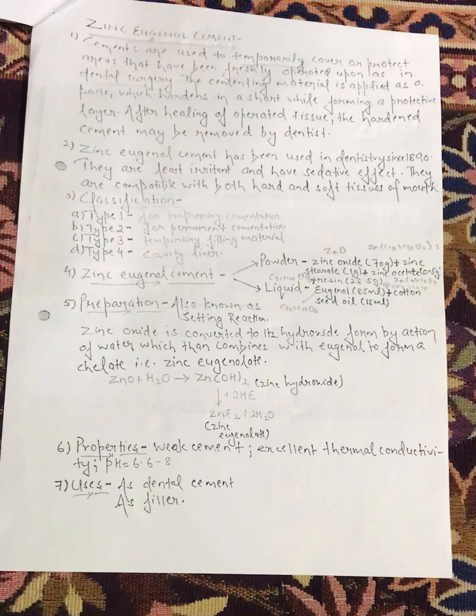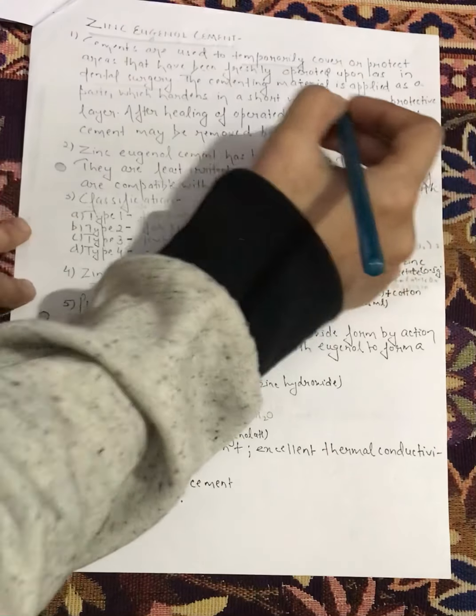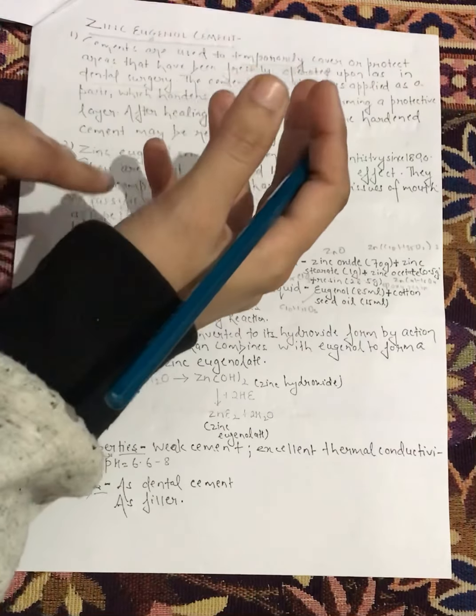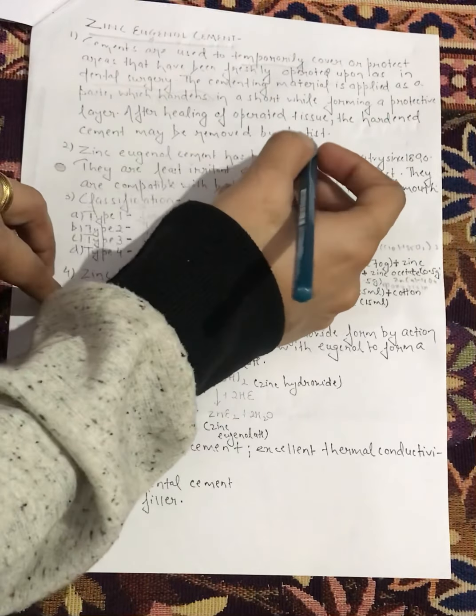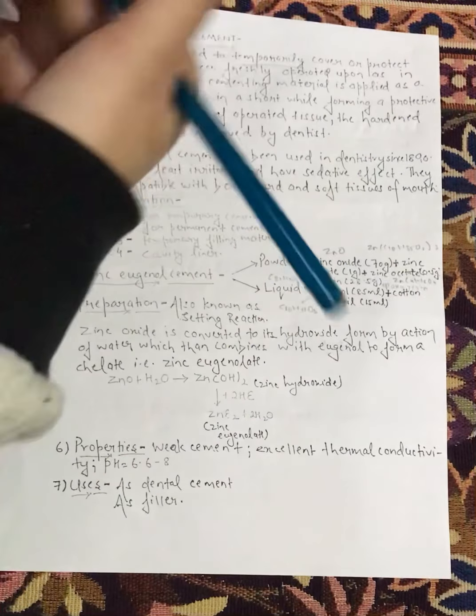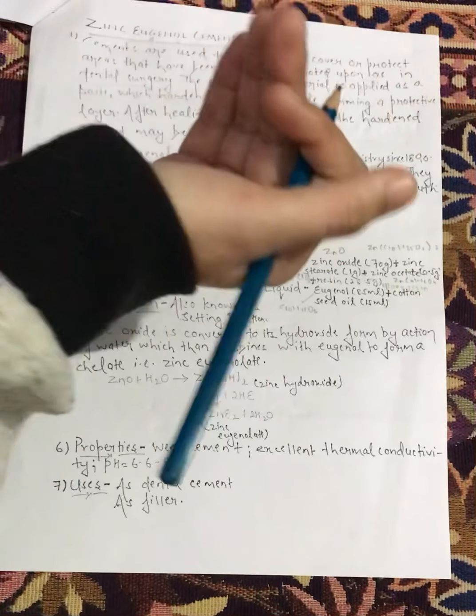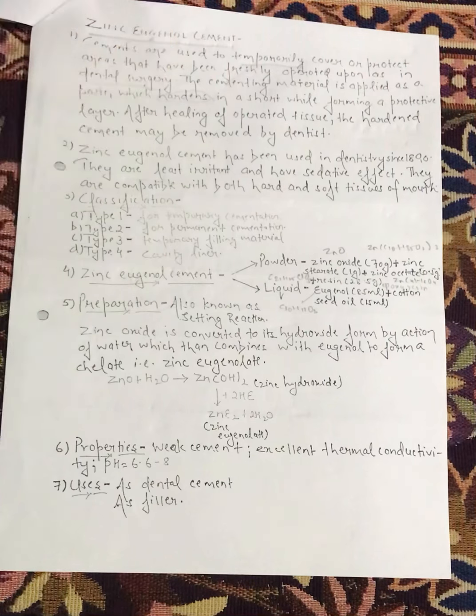When it is applied, this material will be in the form of paste. But after some time, it will be converted to a hardened type of material. After healing of operated tissue, the hardened cement may be removed by the dentist. If it is not required further, then after operation, the dentist may even remove it or leave it as it is.